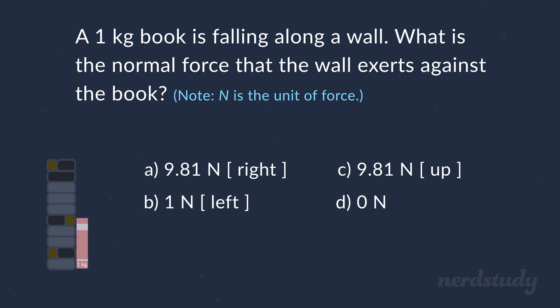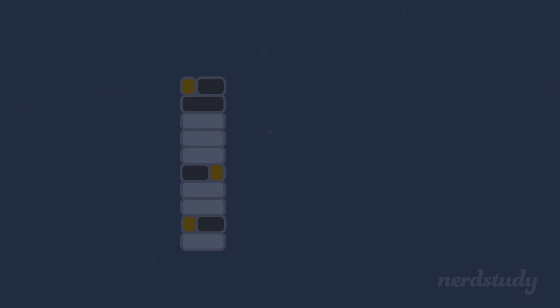All right, let's test our understanding with a simple example. Suppose we place a book that weighs one kilogram against a wall. Then we let the book drop. While the book is dropping, what do you think is the normal force that the wall exerts against the book? Well, the answer is zero newtons.